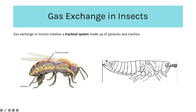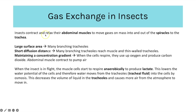Gas exchange in insects: terrestrial insects have a tracheal system made up of spiracles, trachea and tracheoles. The spiracles are valve-like structures running along the side of the abdomen — much like stomata in plants — they can open and close to allow gases to move in and out and to help prevent water loss. Those spiracles are attached to trachea, which branch into many tracheoles, and the tracheoles are the site of gas exchange in insects.